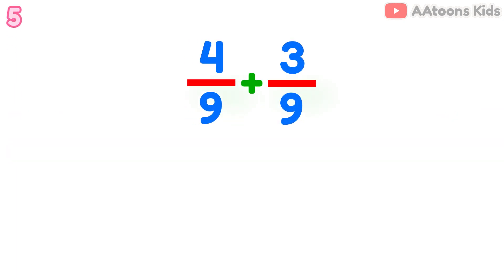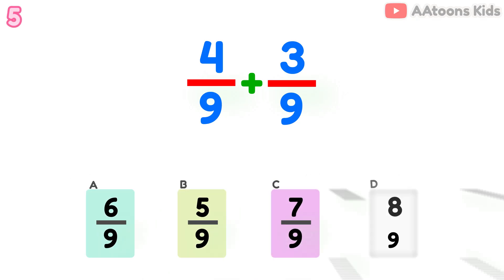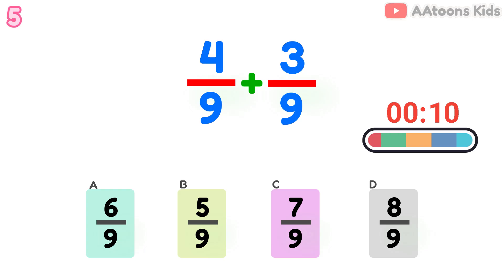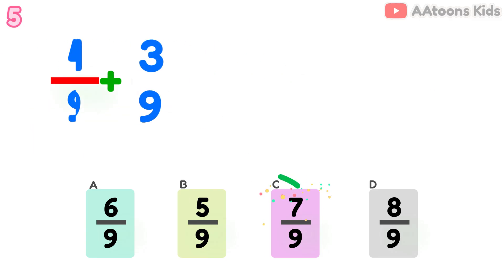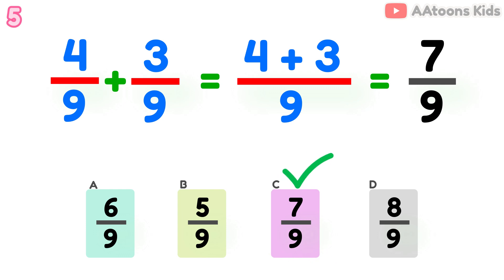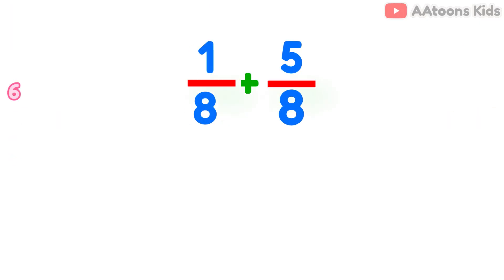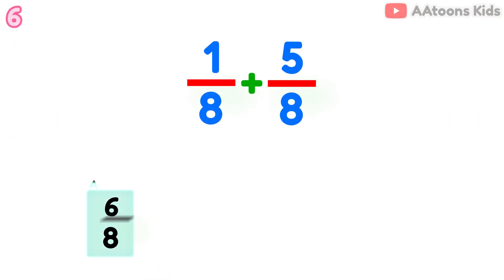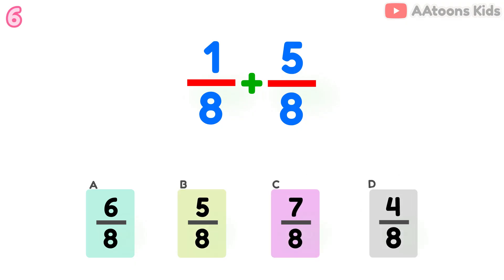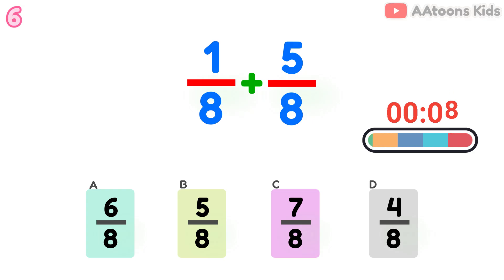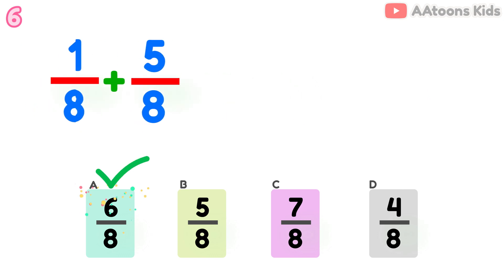Add the fractions: 4 over 9 plus 3 over 9. Add the fractions: 1 over 8 plus 5 over 8. The answer is 6 over 8.